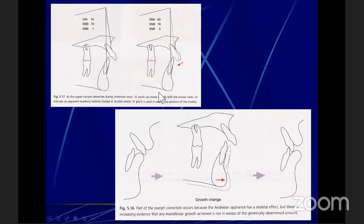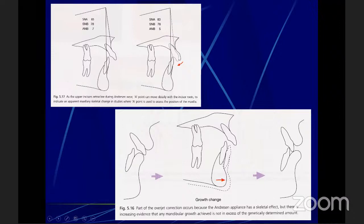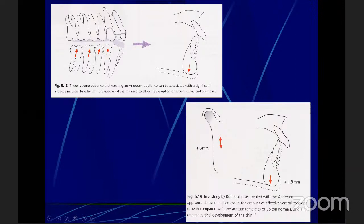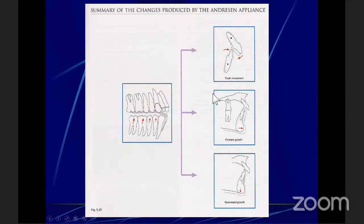The changes with the activator appliance: the upper incisor retroclines. The A point can move distally with the incisor roots, indicating an apparent maxillary skeletal change in studies where A point is used to assess maxillary position. Part of the overjet correction takes place because the Anderson appliance has a skeletal effect — the lower jaw moves forward. There is increasing evidence that any mandibular growth is not beyond the genetically determined pattern. With the activator appliance, we allow significant eruption of the posterior teeth, increasing lower facial height because of eruption of lower molars and premolars. Studies by Sabina Roof and Hans Purchase showed an increase in effective vertical condylar growth compared with Bolton normals, and a greater vertical development of the chin.